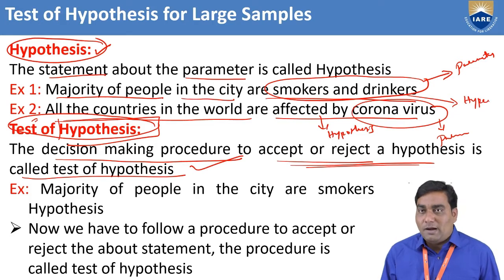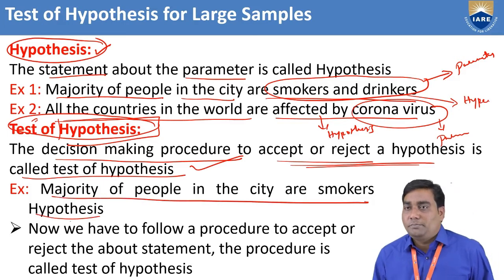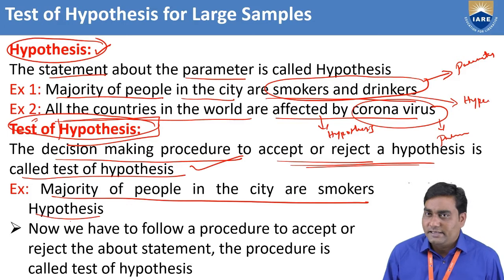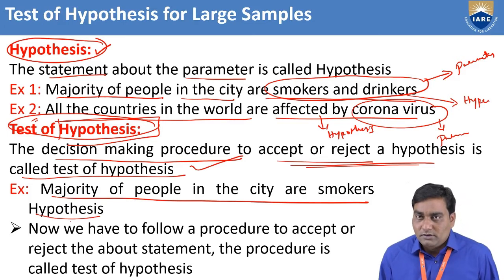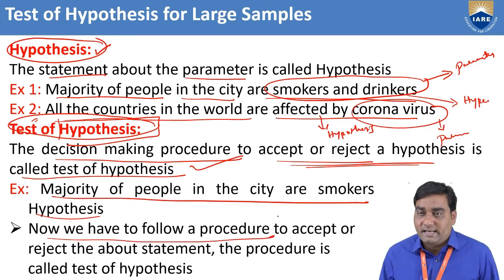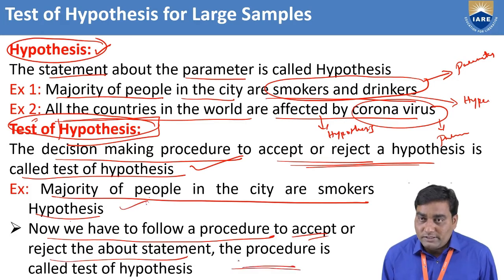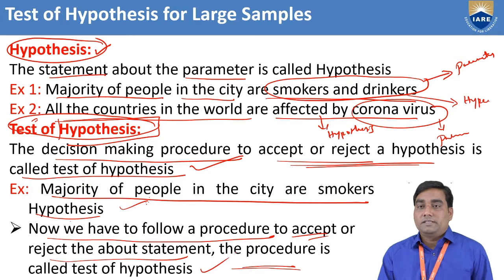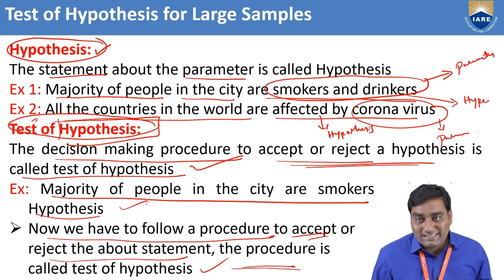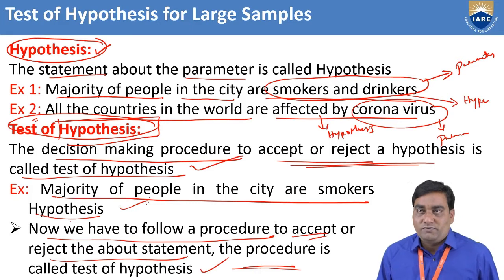To explain with an example: suppose I take the hypothesis that the majority of people in the city are smokers and drinkers. Now we have to follow a procedure to accept or reject this statement. That procedure is called test of hypothesis — we are testing whether to accept or reject the given hypothesis.